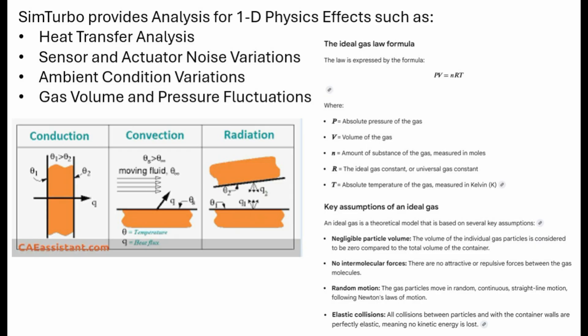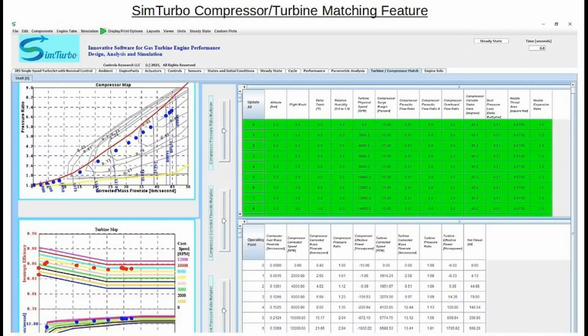But going back to zero-D, if the compressor is just this black box, how does the model have any clue how it performs? It needs some kind of instruction manual, right? It absolutely does. And that's really the secret sauce here - characteristic maps. These are basically detailed lookup tables based on real data or complex simulations. They relate things like air flow, shaft speed, pressure ratio, efficiency - all of the key performance metrics. Multi-variable lookup tables that effectively summarize the super complex 3D aerodynamics of that component.